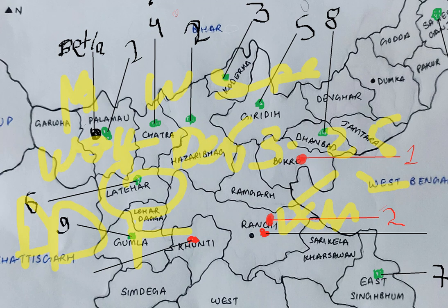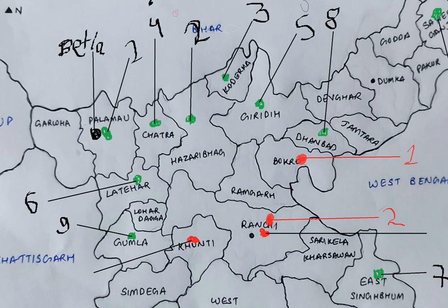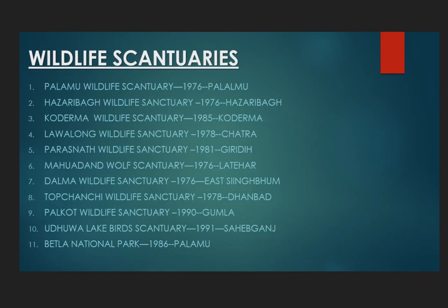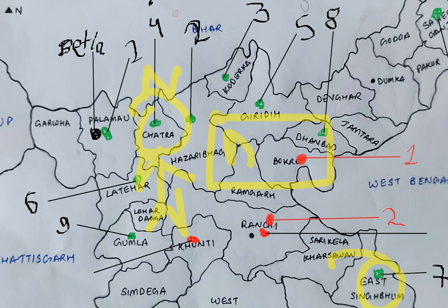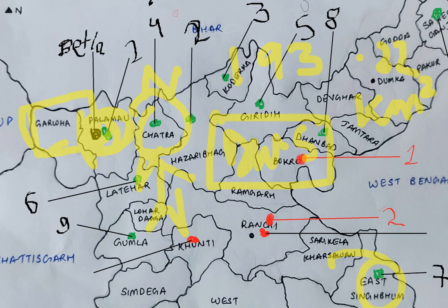Next is Dalma Wildlife Sanctuary, established in 1976 in East Singhbhum. It was inaugurated by Sanjay Gandhi. The area is 193.22 square kilometers, making it the biggest in the Palamu region. It offers shelter to elephant, bear, leopard, and wild boar.